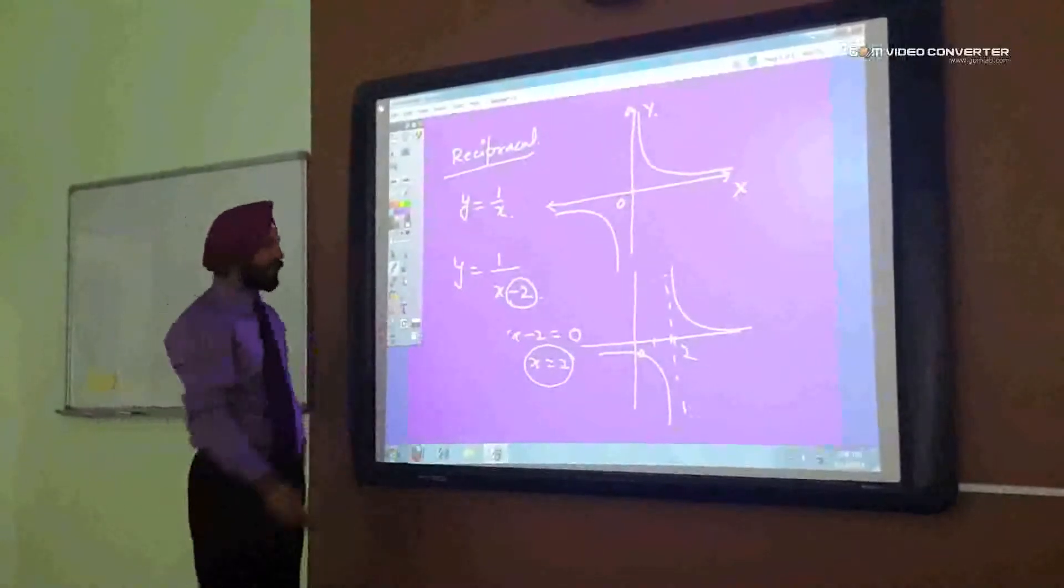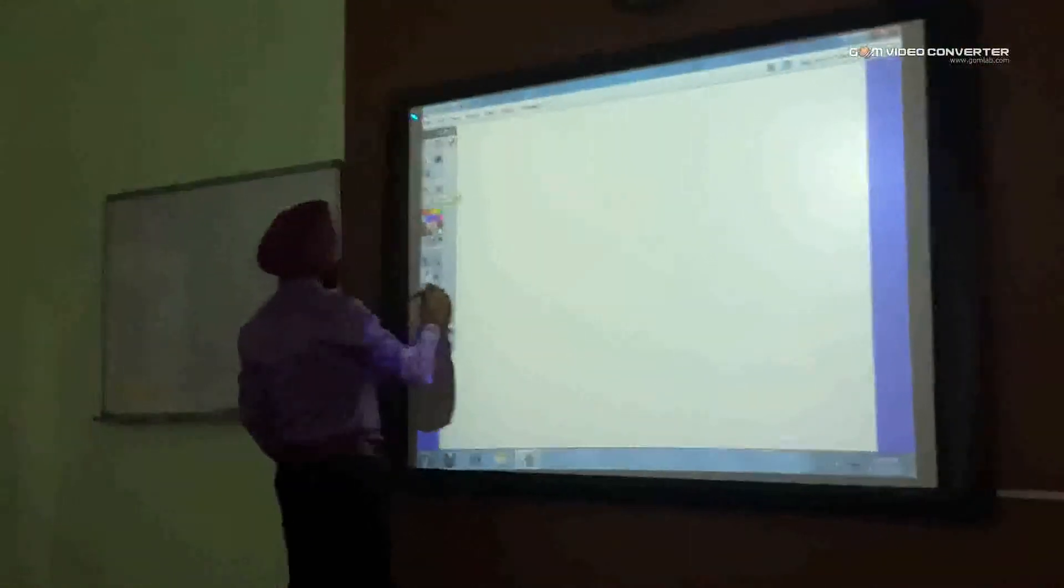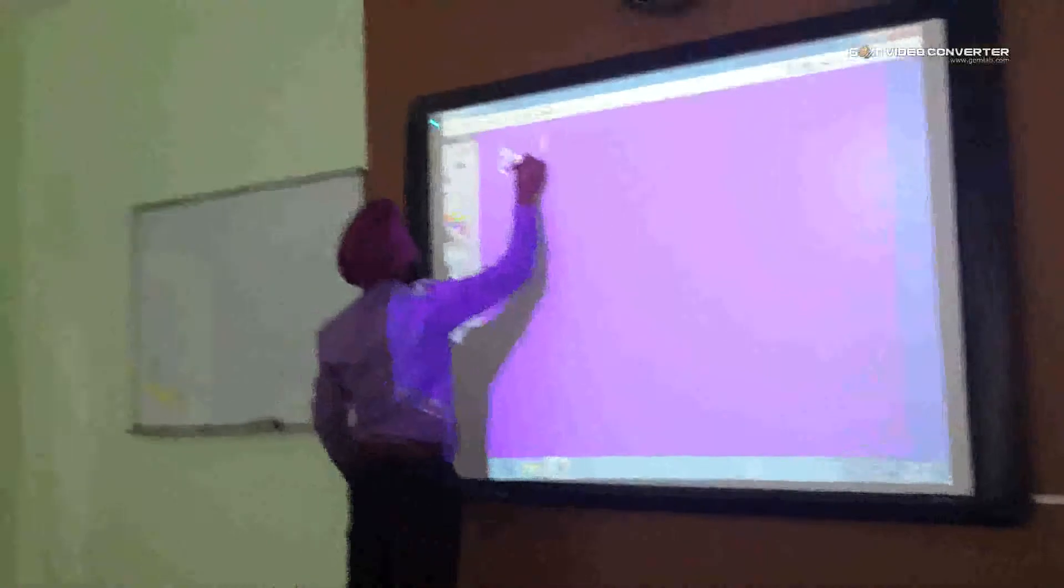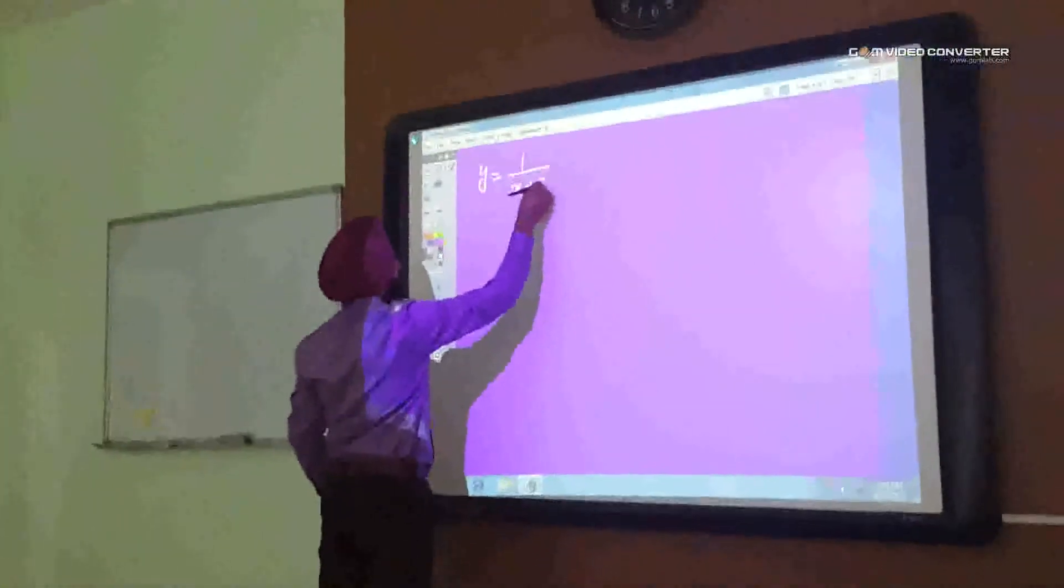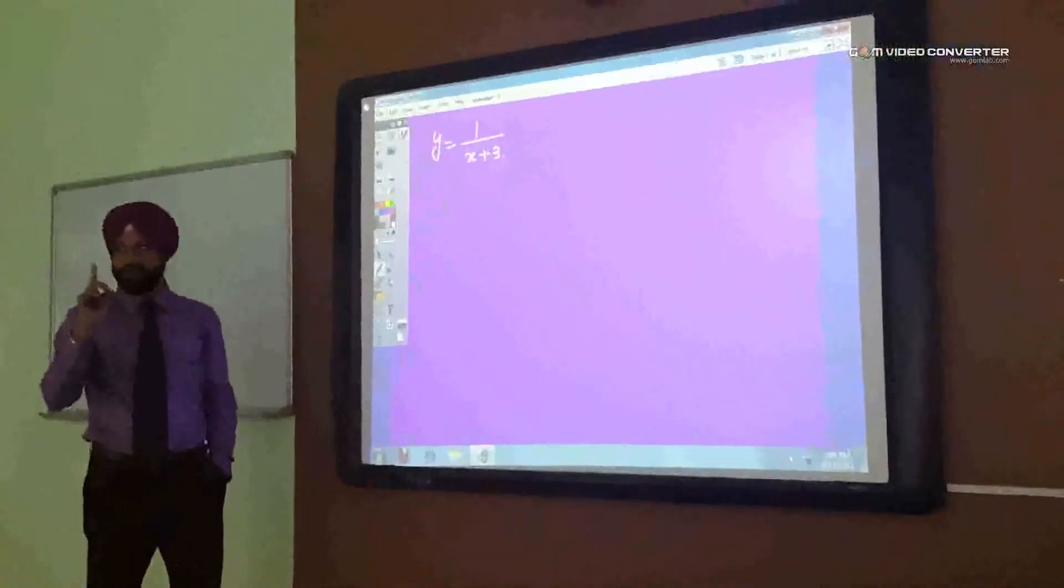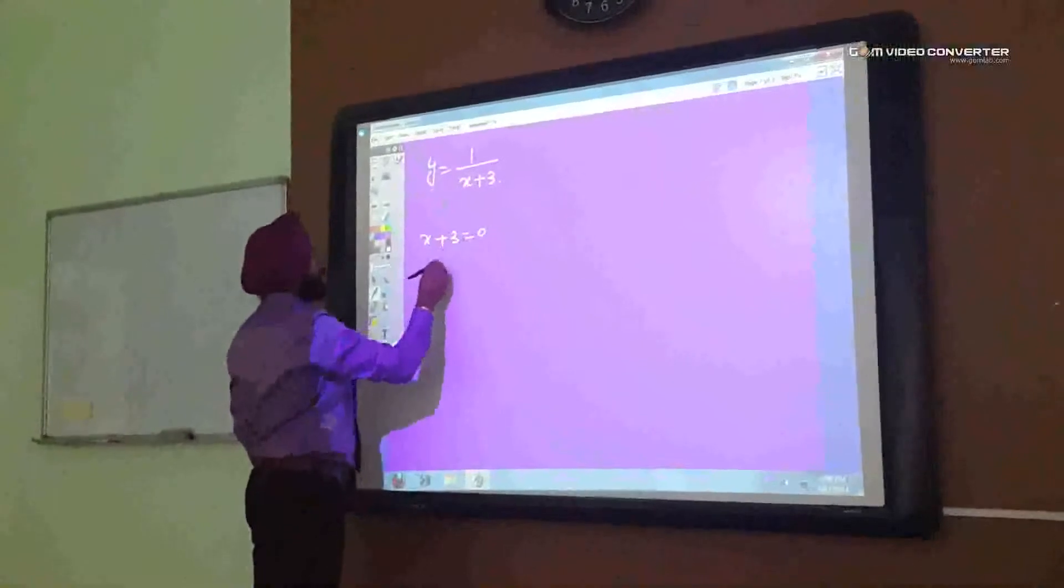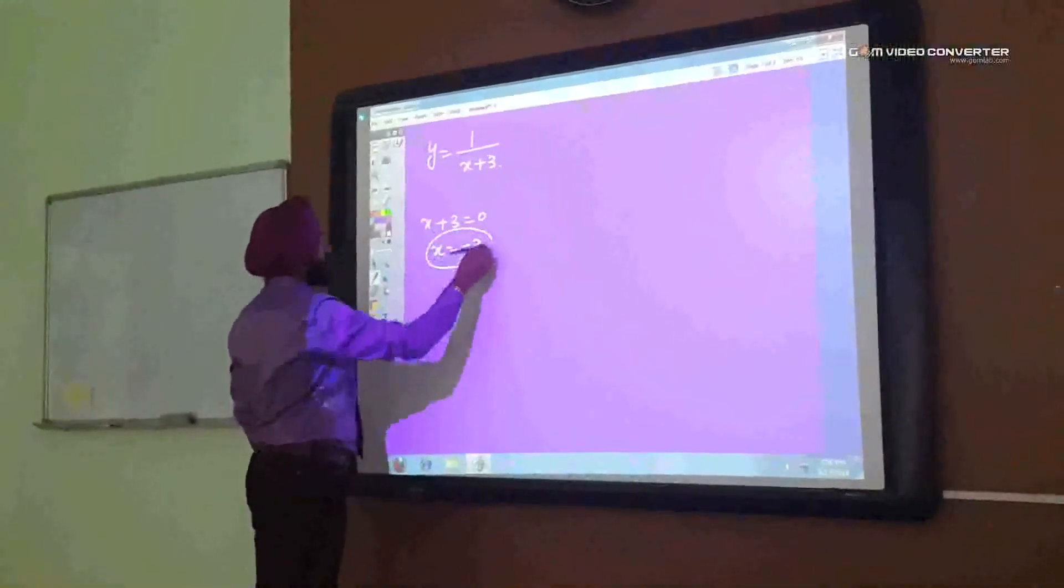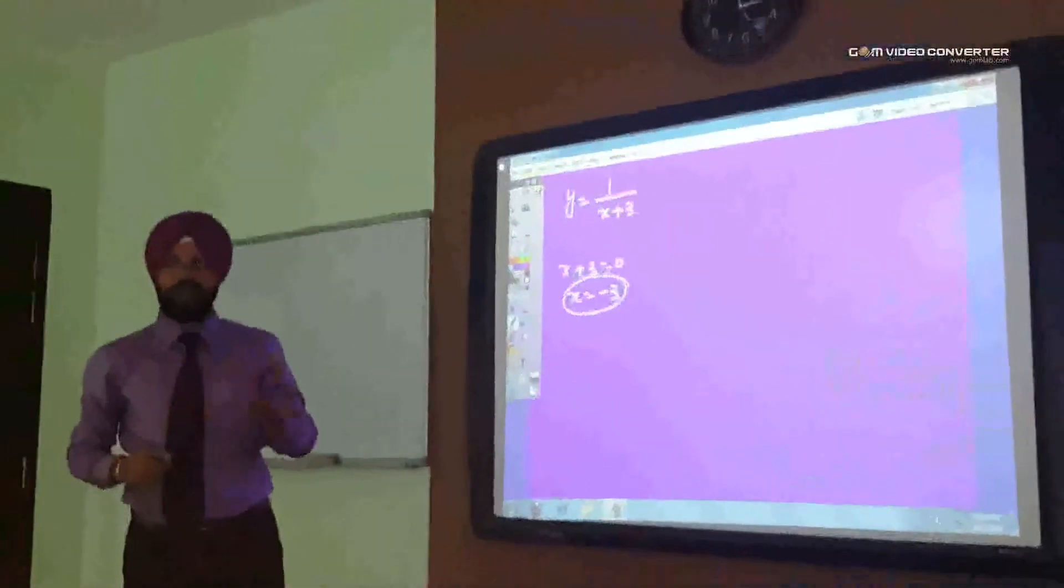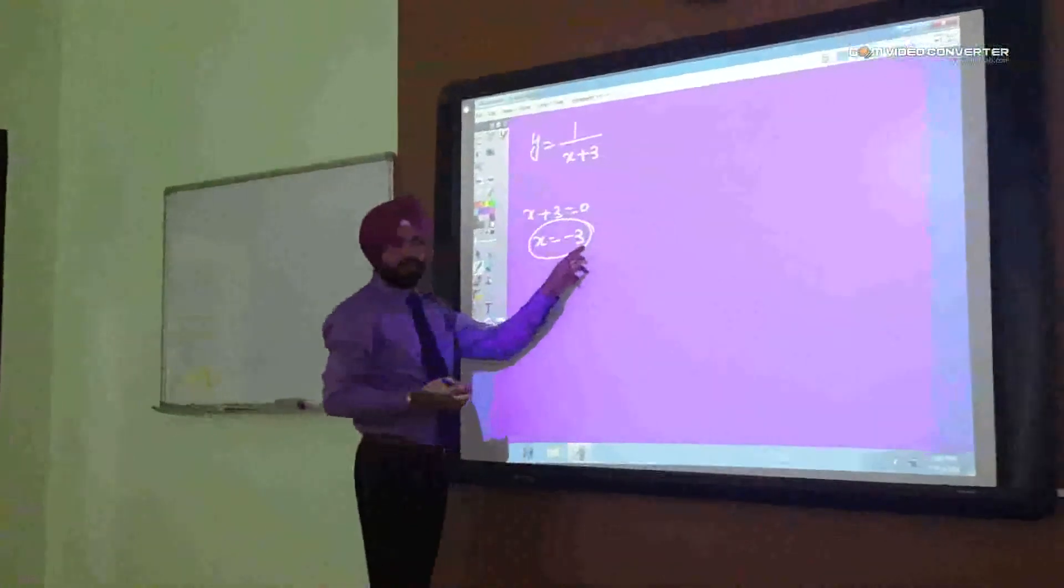Left side and right side changes. And, if it is, again, positive side, then what will happen? Let's say it is x plus 3. Okay, now it is plus 3 not minus so x plus 3 equals to 0 so x equals to minus 3.